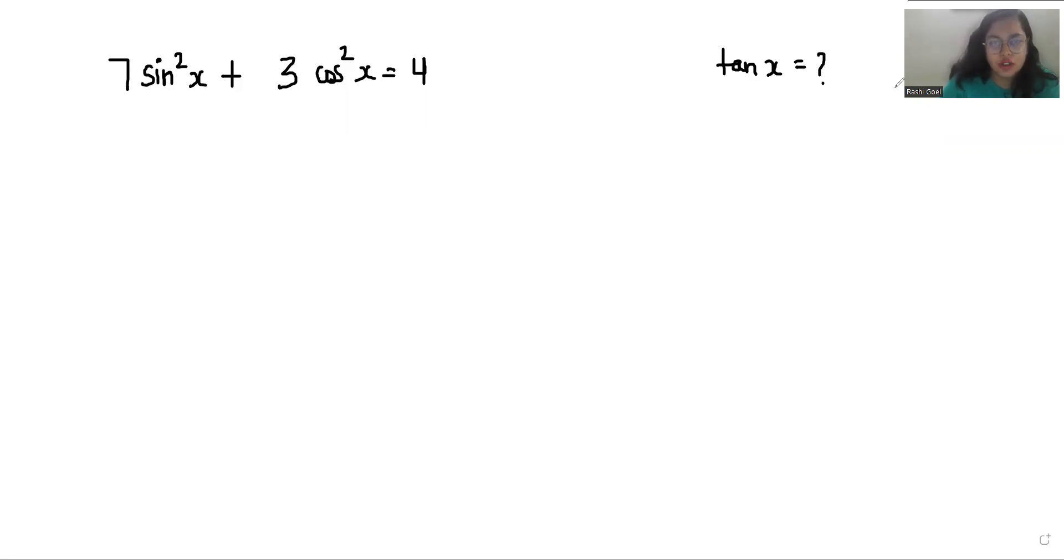So let's start with today's video solution. We have a very famous trigonometric identity: sin²x + cos²x = 1, which means cos²x = 1 - sin²x.